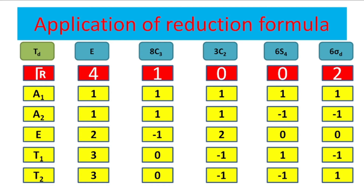For one last example, consider the tetrahedral Td point group, which has 24 total operations and five classes. Using the bond vector method for methane: under identity, no bond is disturbed (4); under C3, the bond through which the axis passes is undisturbed (1); under C2, all bonds are disturbed (0); under S4, all bonds are disturbed (0); under the dihedral plane, the two bonds through which the plane passes are undisturbed (2). The reducible representation is 4, 1, 0, 0, 2.